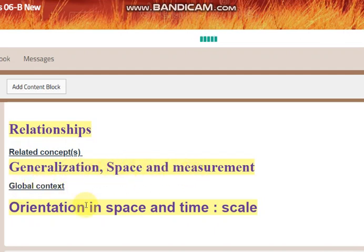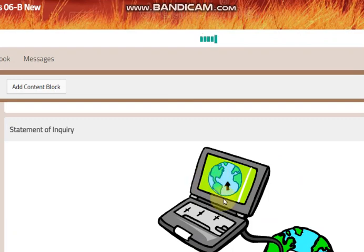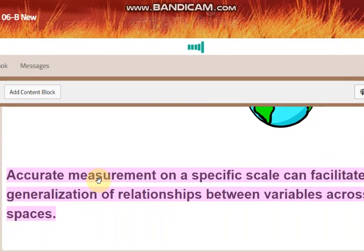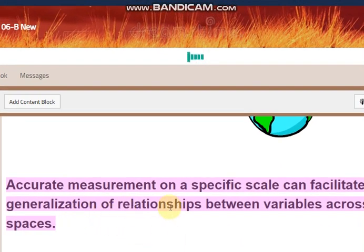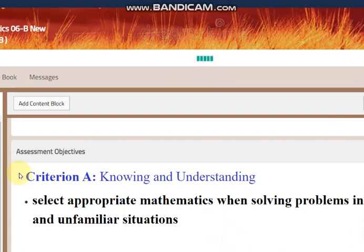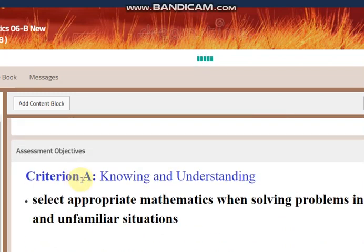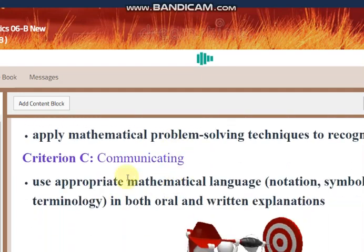The global context is orientation, space, and time scale. The statement of inquiry is: accurate measurement on a space scale can facilitate generalization of relationships between variables across different spaces. We have three assessment criteria: Criterion A — knowing and understanding; Criterion B — investigating patterns; and Criterion C — communicating.